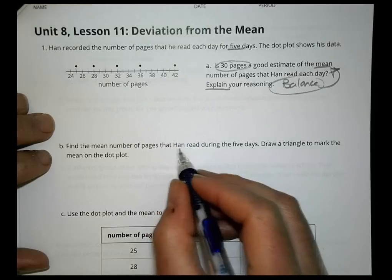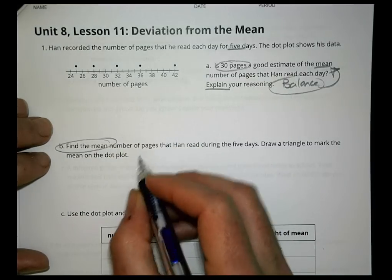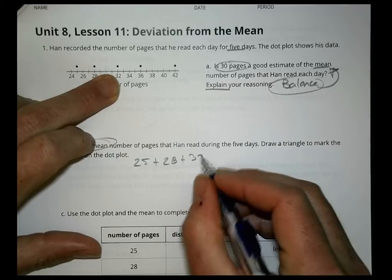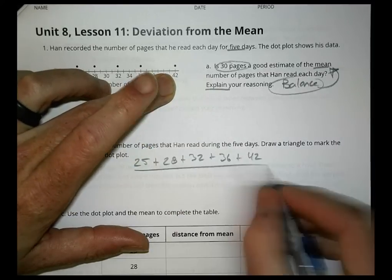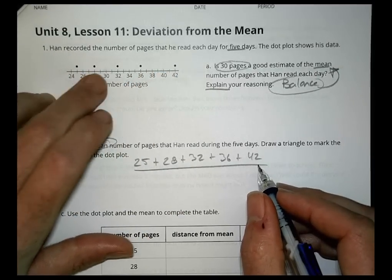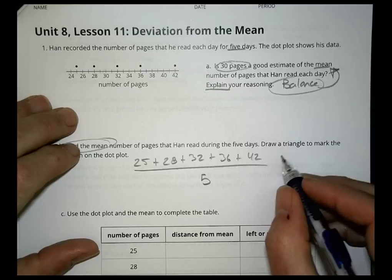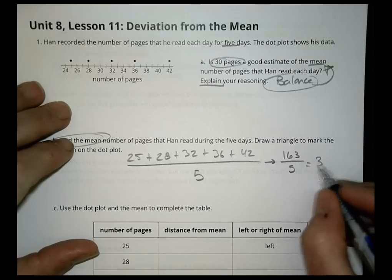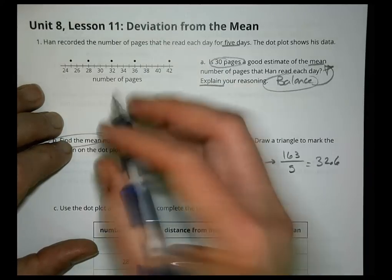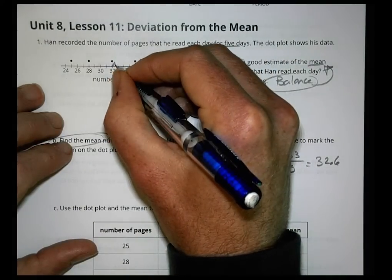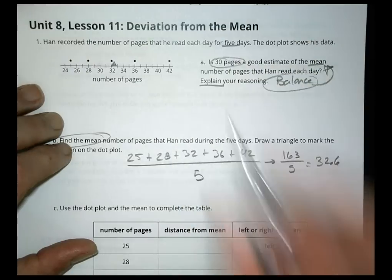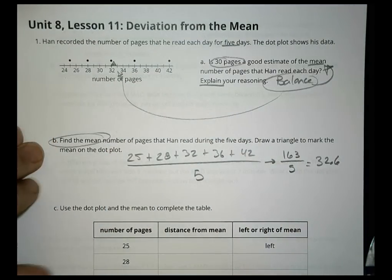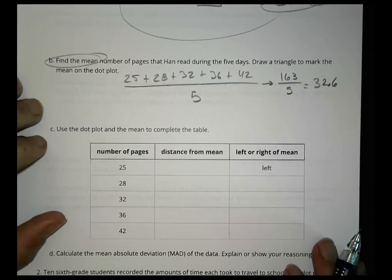Find the actual mean number of pages Han read. We add up 25 plus 28 plus 32 plus 36 plus 42, and divide by 5 data points. The sum is 163 divided by 5, which equals 32.6. So we'd place the triangle between 32 and 33 at 32.6. That looks like a better balance point for the whole set of data.